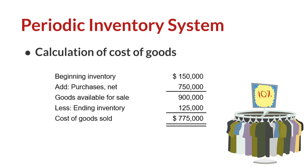To determine the cost of goods sold, we start with the cost of goods on hand at the beginning of the accounting period — this represents our beginning inventory. We add to it the cost of goods purchased to arrive at our goods available for sale. We then subtract the cost of goods on hand at the end of the accounting period, which represents our ending inventory, to arrive at our cost of goods sold.